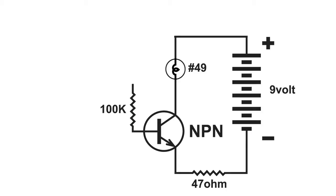And I'm going to put in each transistor to see what happens in this circuit. You can see I've got a 47 ohm resistor on the emitter, and a number 49 bulb on the collector. A 9 volt battery as the power supply.